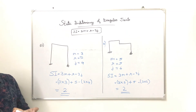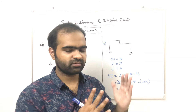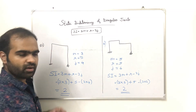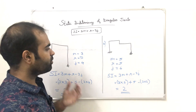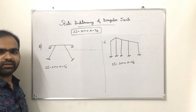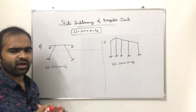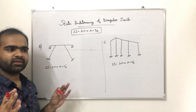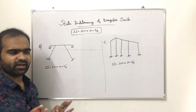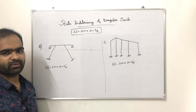The equation is simple mathematics. If you have any type of support with reactions, this is the equation. You figure out how many members there are, how many joints there are, and you apply the formula. If you have any type of support, count the reactions, the members, and the joints.